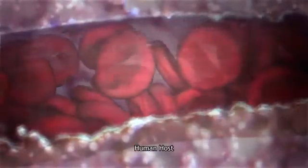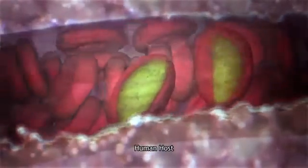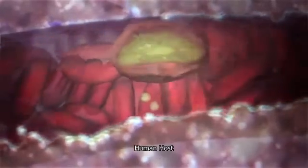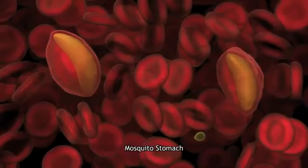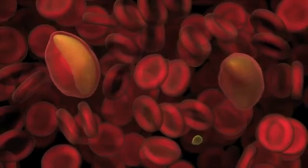However, back in the human host, a few of the parasites turned into a different type of cell, one that is sexual but remains dormant. Malaria's sex is triggered when the warm human blood begins to cool inside the insect's stomach.